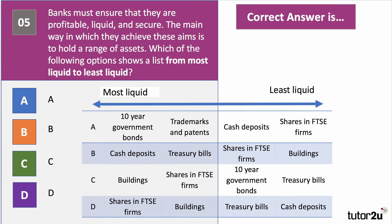Question 5: Banks must ensure that they are profitable, liquid and secure. The main way they achieve these aims is to hold a range of assets. Which of the options — A, B, C or D — shows a list from most liquid asset to least liquid asset? Have a go and press the pause button.